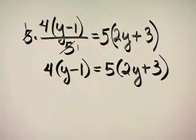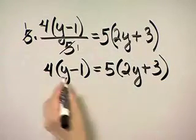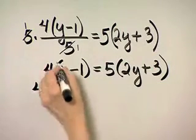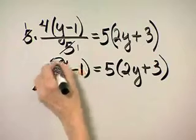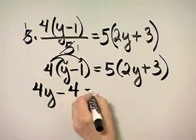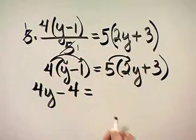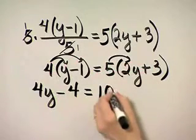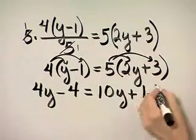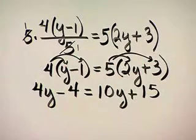Notice I no longer have an equation with fractions. And now let's use the distributive property and multiply. 4 times y is 4y, and then minus 4 times 1 is 4, equals 5 times 2y, that's 10y, plus 5 times 3 is 15. Can we simplify?